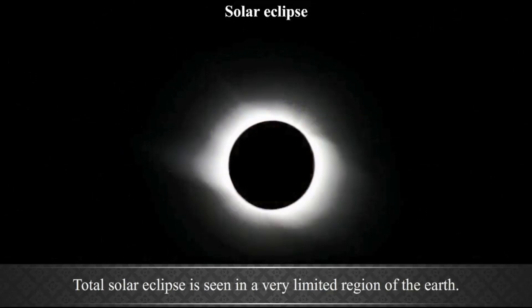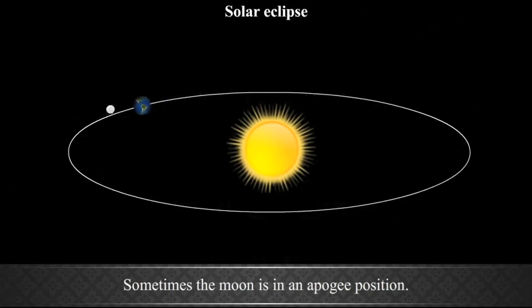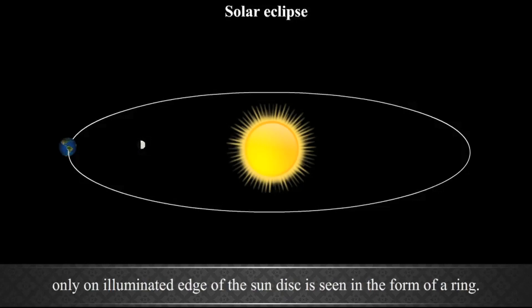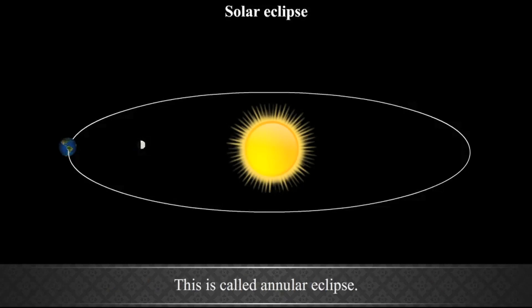Sometimes the Moon is in an apogee position. This means it is at its farthest from the Earth. As a result, the deep shadow of the Moon is cast in space and does not reach the Earth. From a very small region of the Earth, only an illuminated edge of the Sun disk is seen in the form of a ring. This is called Annular Eclipse. Annular Eclipse is a rare phenomenon.